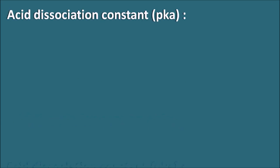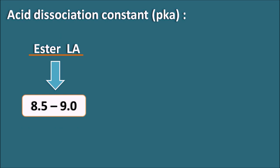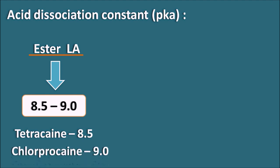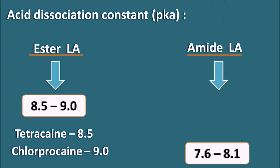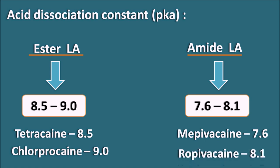Let us start with the first difference: the acid dissociation constant pKa. Ester local anesthetics have a pKa value of around 8.5 to 9.0. For example, tetracaine has a pKa of 8.5, and chloroprocaine has a pKa of around 9.0. On the other hand, amide local anesthetics have a pKa value of around 7.6 to 8.1. For example, mepivacaine has the lowest pKa of around 7.6, and ropivacaine has the maximum pKa among amide local anesthetics at 8.1.